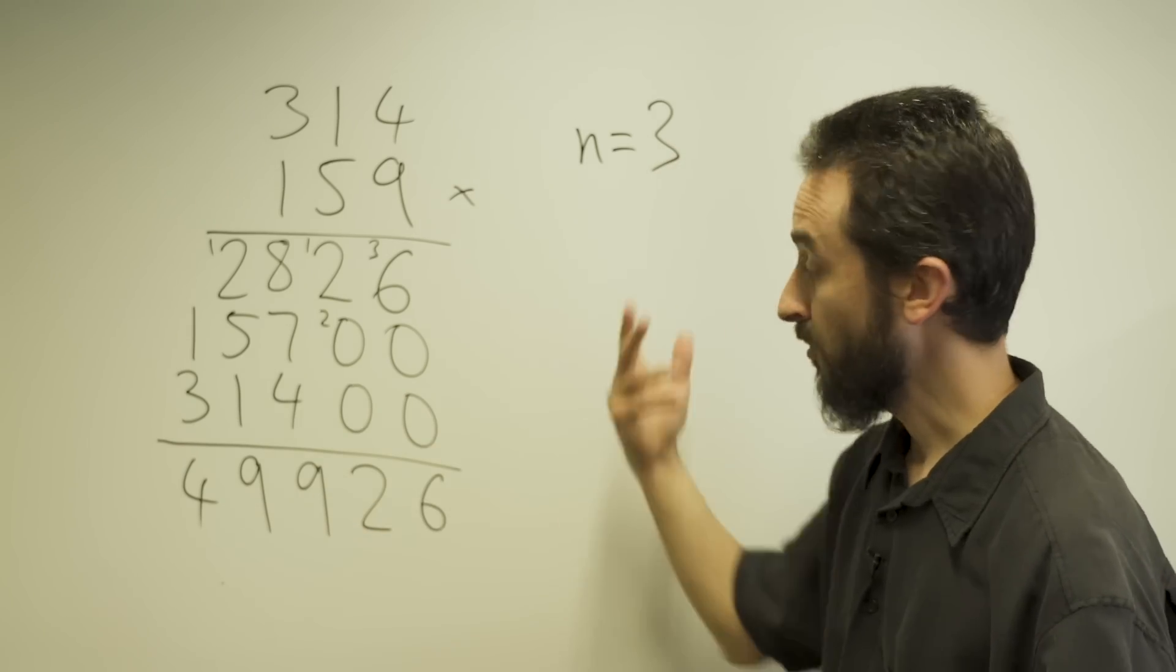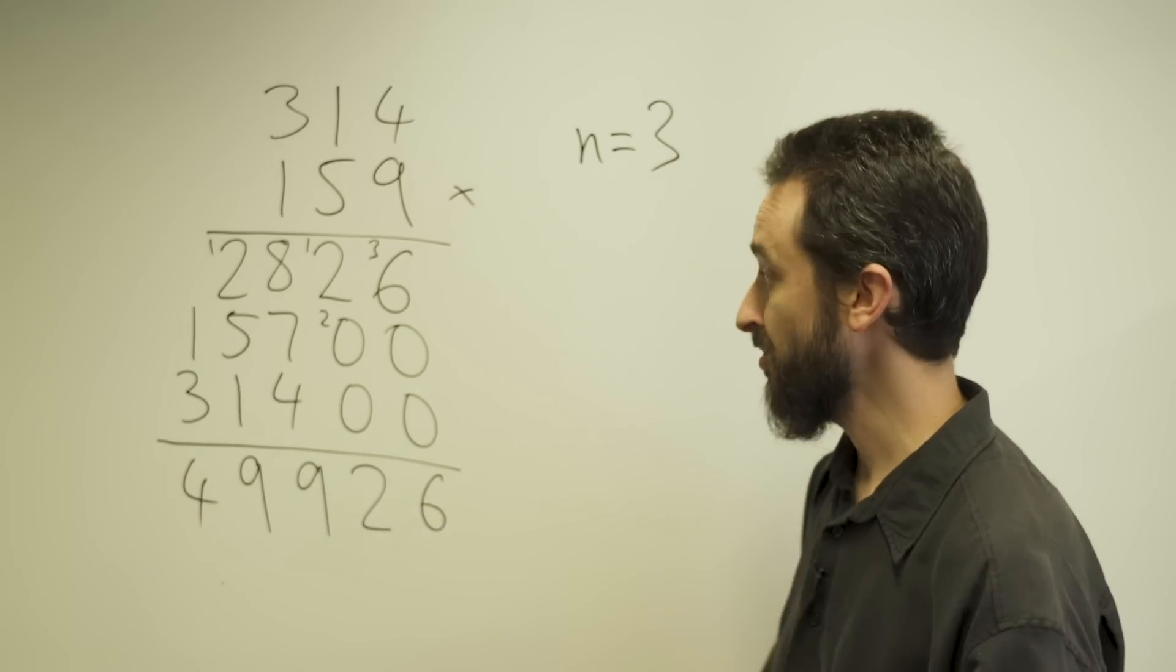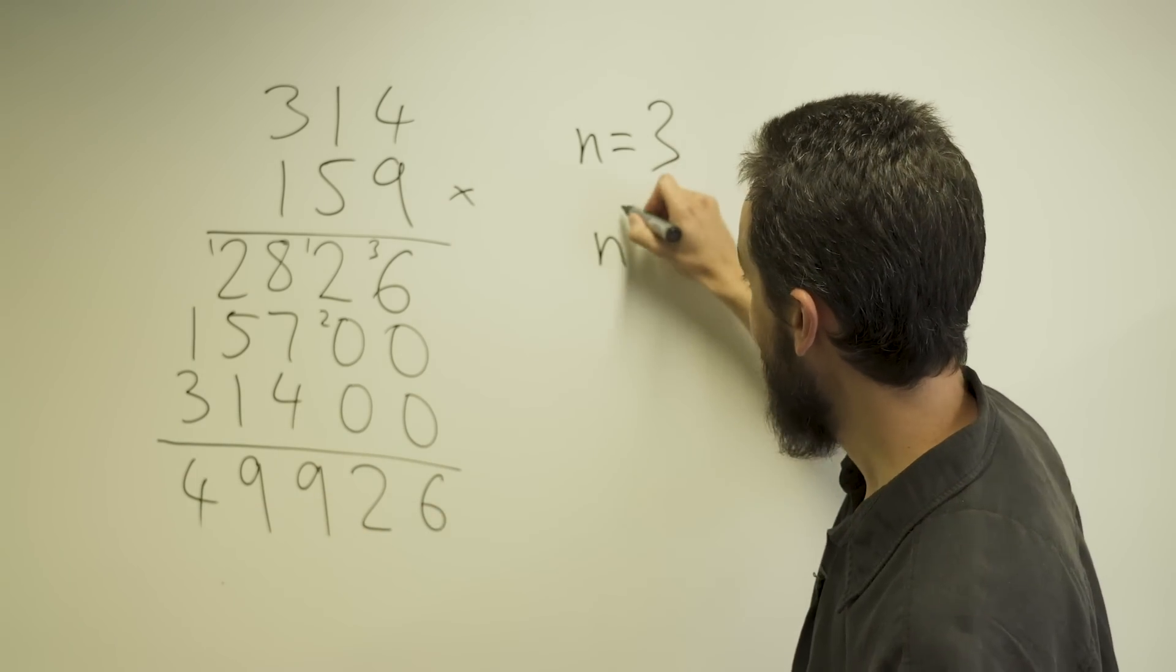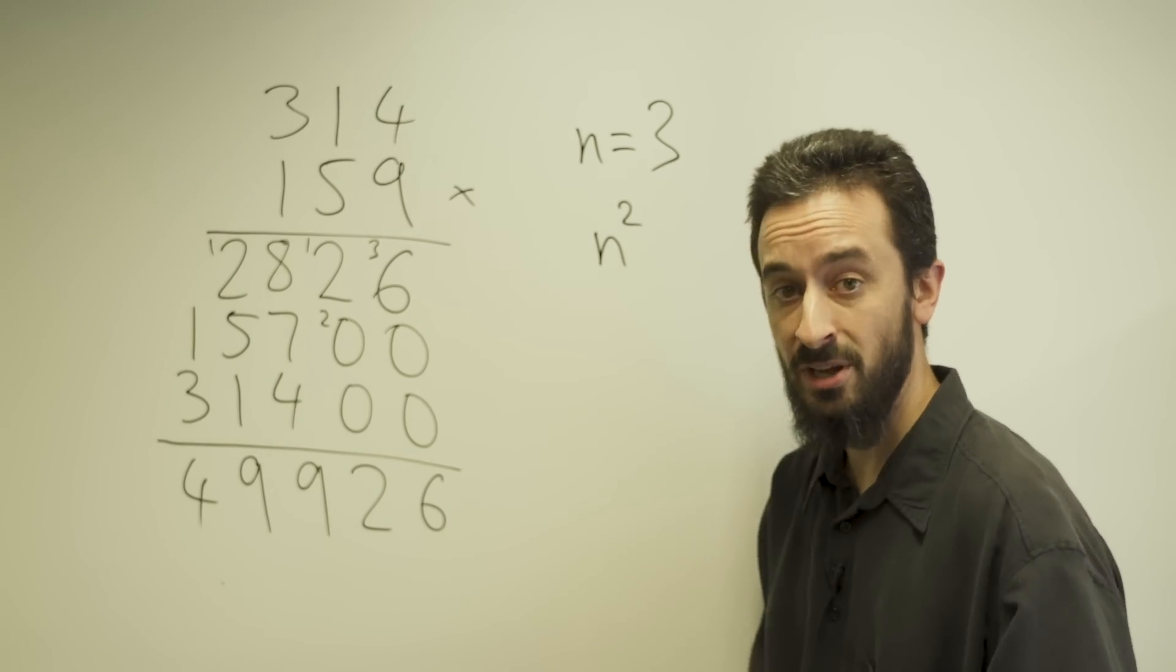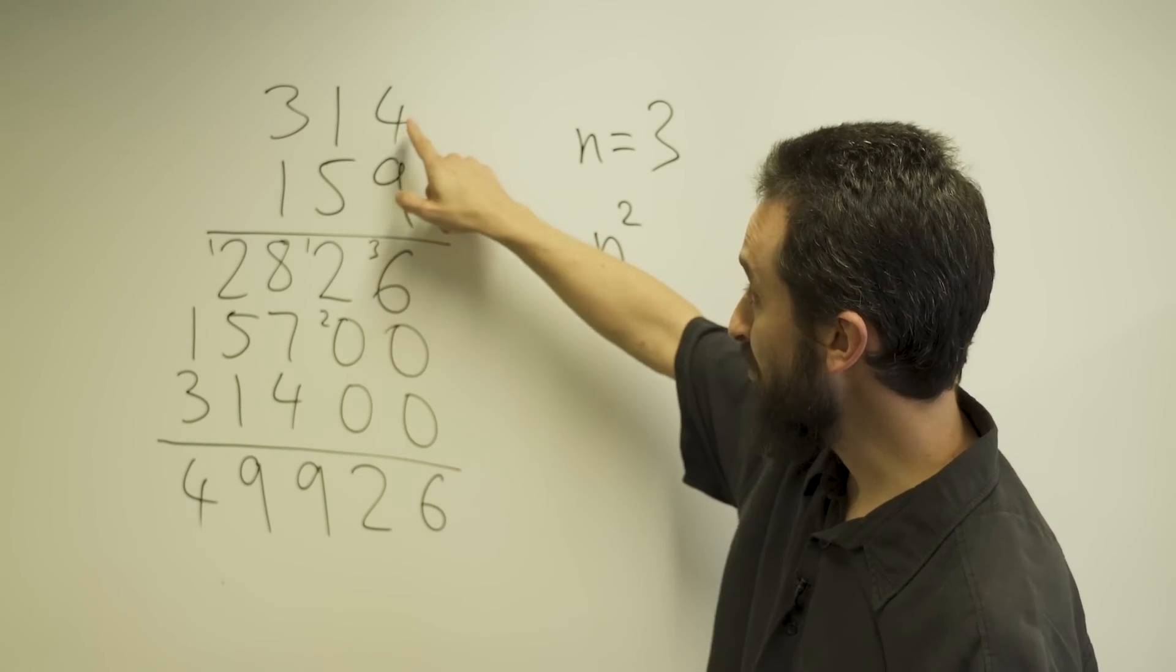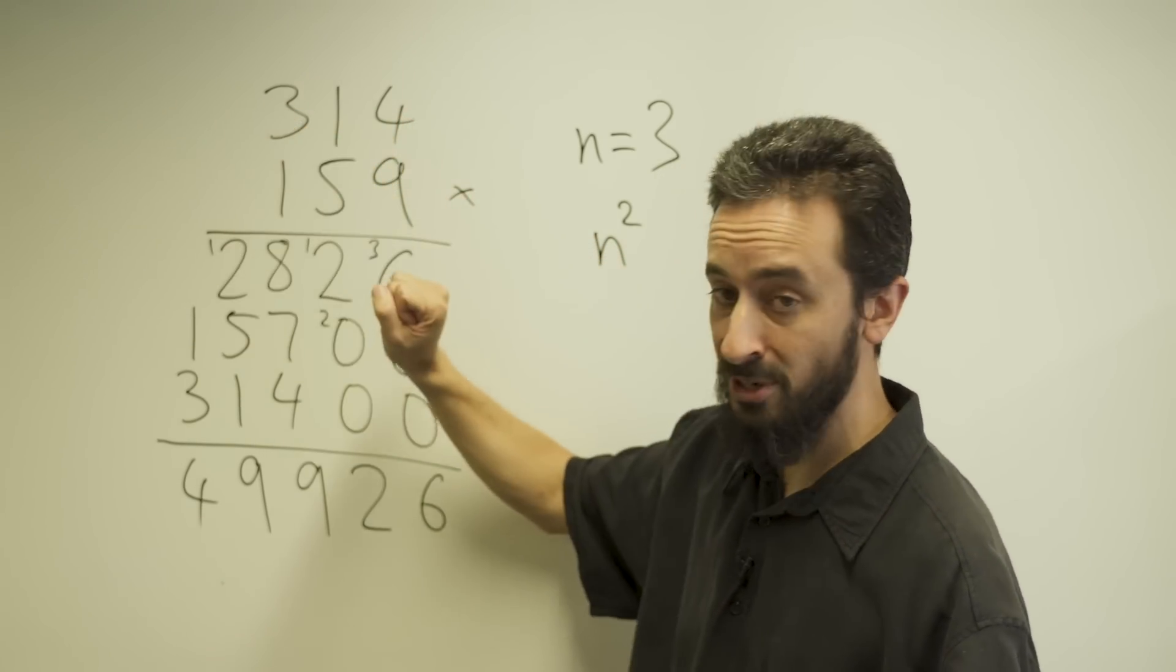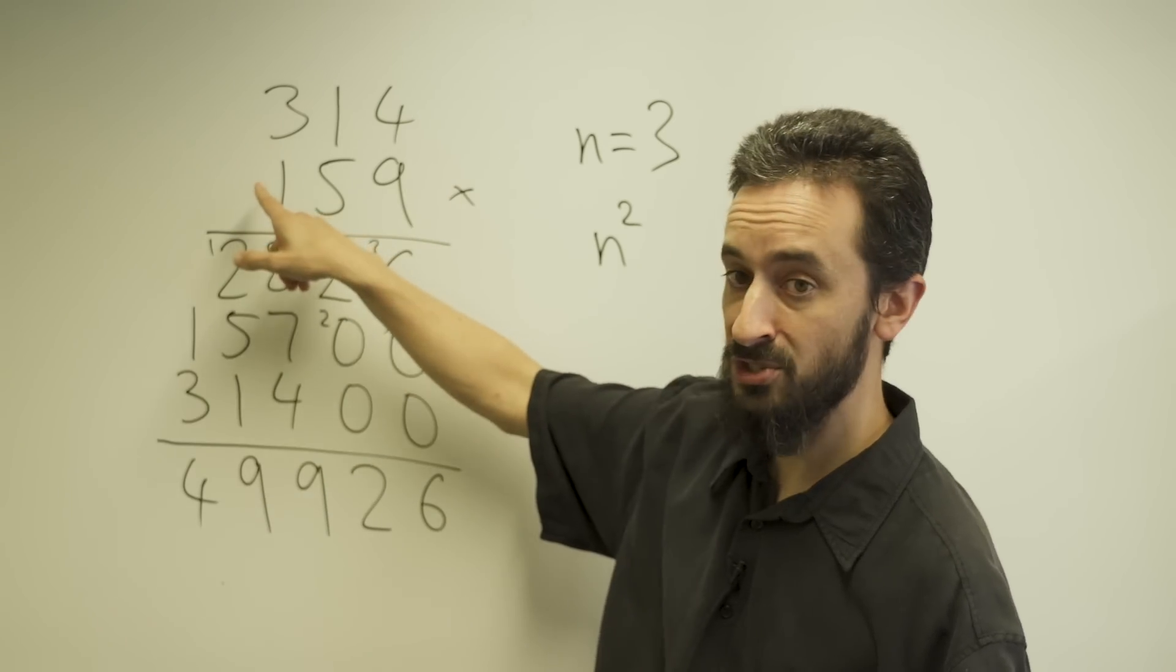So this, we all know how to do this. The total amount of work I have to do is proportional to n squared. It's n times n. Because I have to multiply every one of the n digits of the first number times every one of the n digits of the second number.